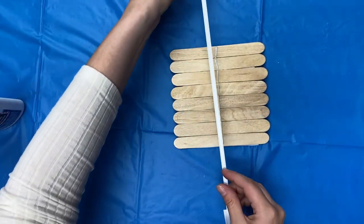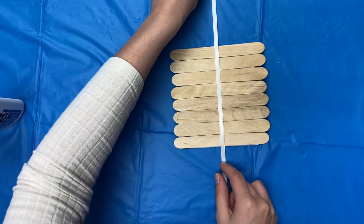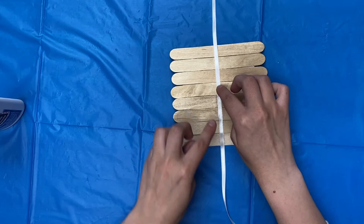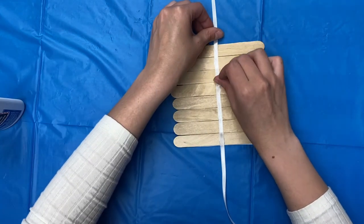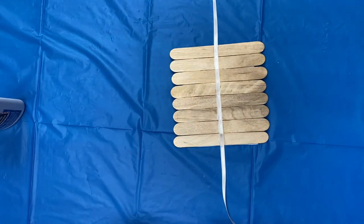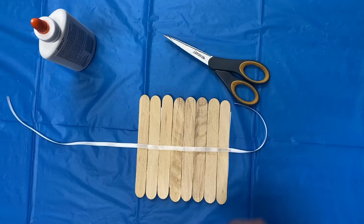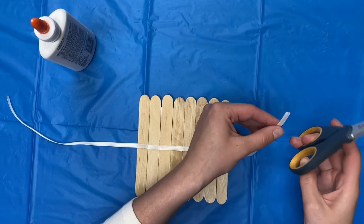Take your ribbon and attach it to the glue. Give it a minute to dry, then trim the ribbon.